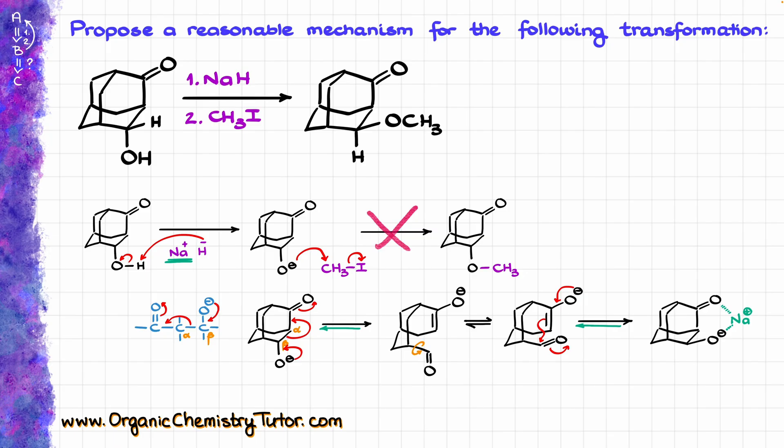And now when we go to the next step with our methyl iodide, we are going to have a reaction with this more stable conformation, which is going to be a predominant species in this solution, so this guy is going to react with our methyl iodide like so, giving us our final product.